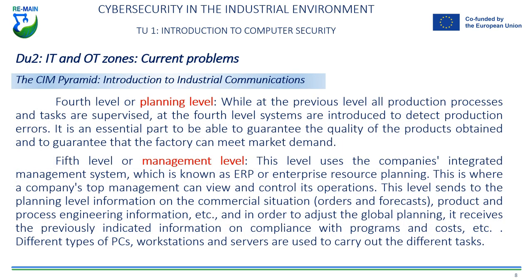Fourth level, or planning level. While all production processes and tasks are monitored at the previous level, at the fourth level systems are introduced to detect production errors. This is an indispensable part of ensuring the quality of the products obtained and ensuring that the factory can meet market demand.